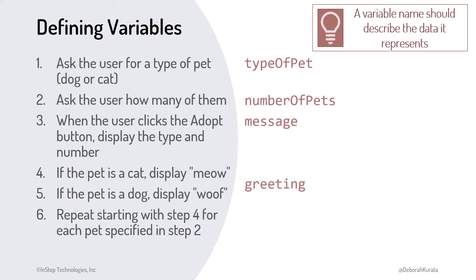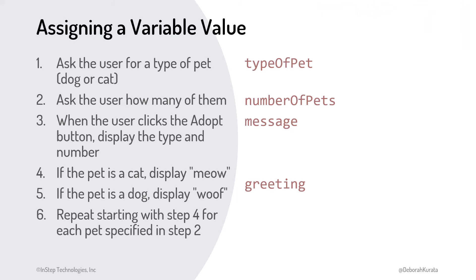To store something in a variable, assigning it a value, we use the equal sign. Here we assign a value of cat. We set the numberOfPets to 3. The message to display to the user is built from the entered values. And the greeting repeats the appropriate greeting once for each pet.